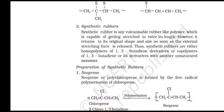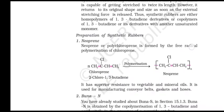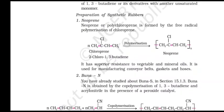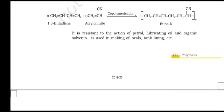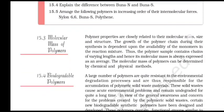Synthetic rubbers: synthetic rubbers are any vulcanizable rubber-like polymers which are capable of getting stretched to twice their length but return to their original shape and size as soon as the external stretching force is released. Synthetic rubbers are either homopolymers of 1,3-butadiene derivatives or copolymers of 1,3-butadiene or its derivatives with another unsaturated monomer. Neoprene or polychloroprene is formed by the free radical polymerization of chloroprene. It has superior resistance to vegetable and mineral oils and is used for manufacturing conveyor belts, gaskets and hoses. Buna-N is obtained by the copolymerization of 1,3-butadiene and acrylonitrile in the presence of a peroxide catalyst. It is resistant to the action of petrol, lubricating oil and organic solvents and is used in making oil seals, tank linings, etc.